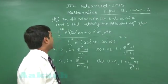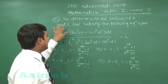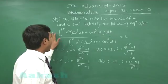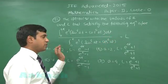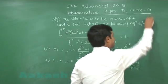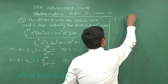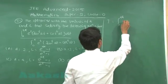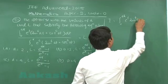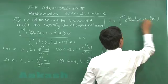Next is question number 51: the option or options with the values of a and l that satisfy the following equation. One equation in terms of an integral is given. We start by considering the integral I as the integral from 0 to 4π of e^t (sin(6at) + cos(4at)) dt.